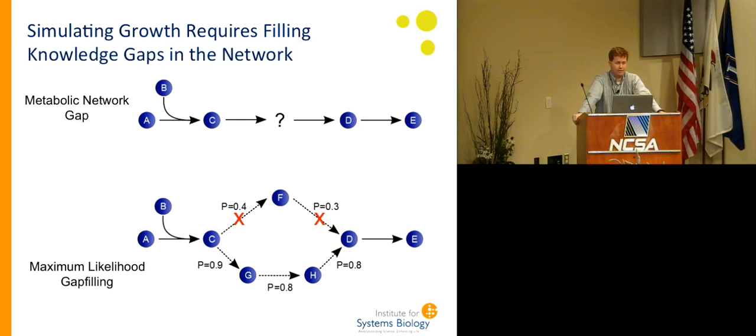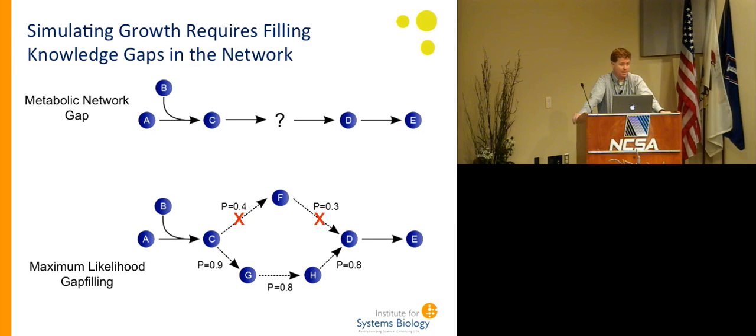As you start building out these reconstructions for a plant or any other organism, what invariably happens — and this happens even in E. coli, which is probably the best understood organism we have — is that when you build all that we know about metabolism together and you try to simulate its ability to grow, there are always gaps in the network. And these become really important for us to fill in in the best way possible.